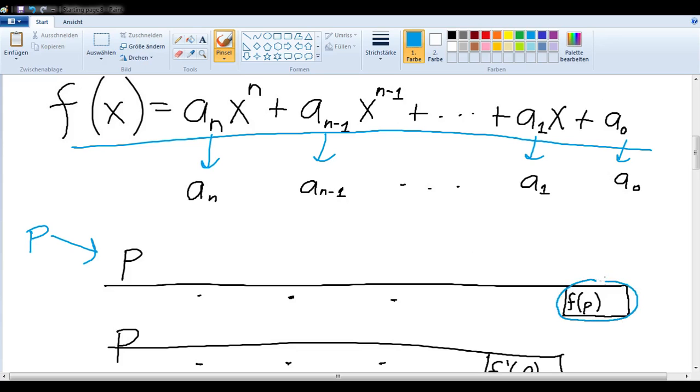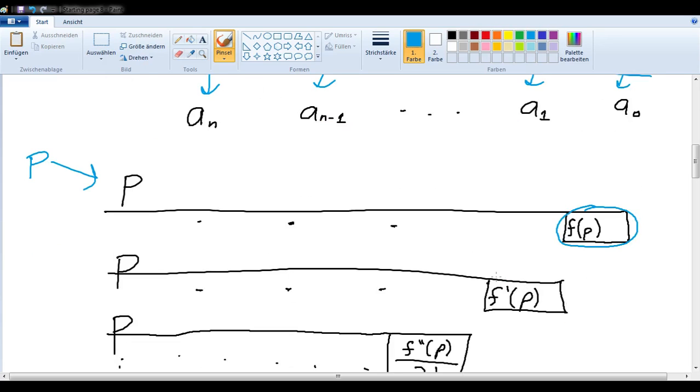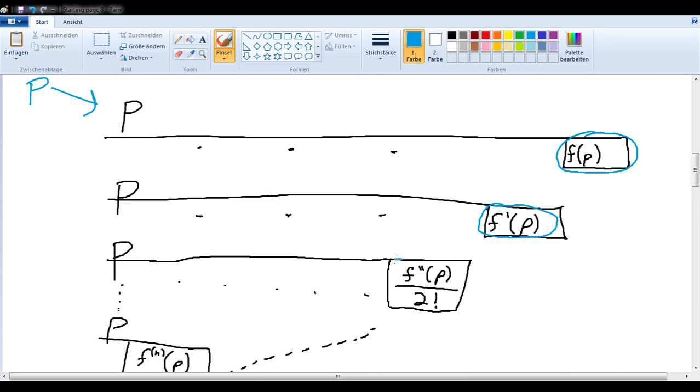Then we end up here with, at the end of the first line of Horner, f of p. The next line f prime of p, and now f double prime of p divided by 2 factorial. We had to multiply that by 2 factorial in order to get the second derivative of f evaluated at p.